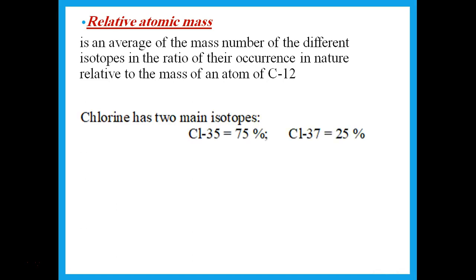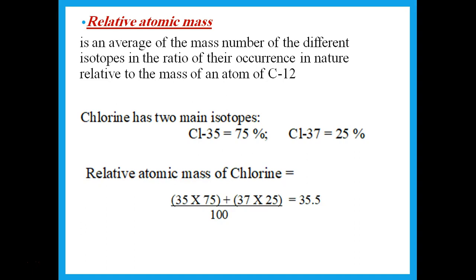Chlorine has two main isotopes: mass number 35 (75% occurrence) and mass number 37 (25% occurrence). The relative atomic mass = (35 × 75 + 37 × 25) / 100 = 35.5, which matches what we see in the periodic table.